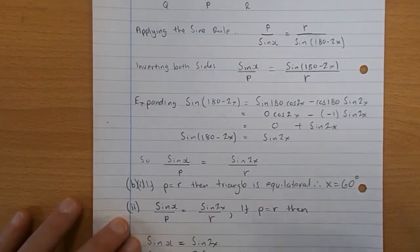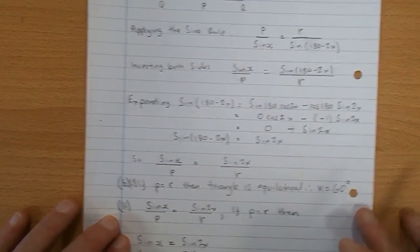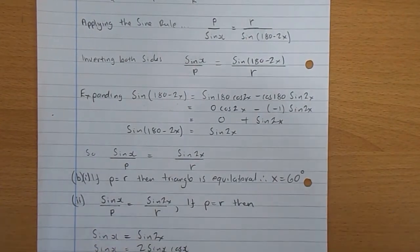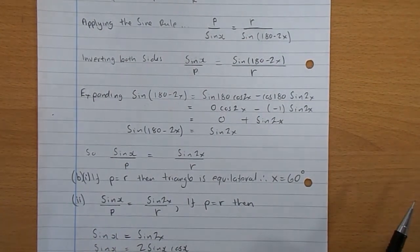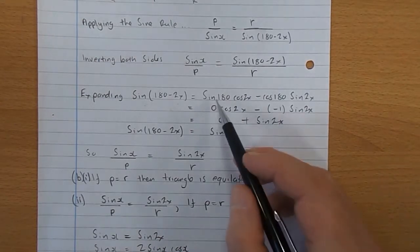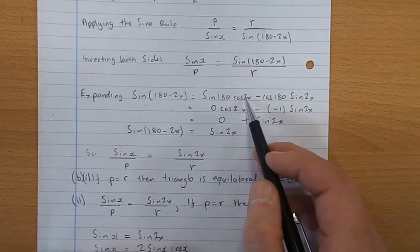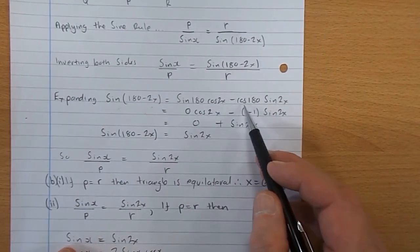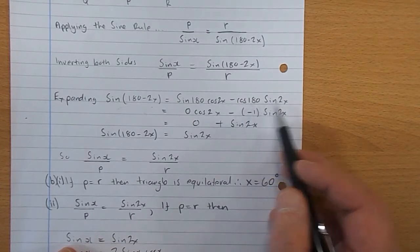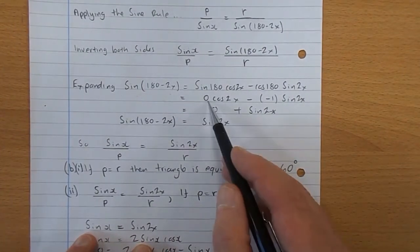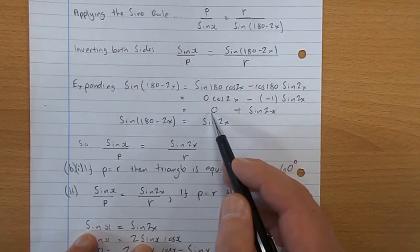Now, we're going to expand sine 180 take 2X. You look for the expansion for sine A take B in your formula list. Sine 180 cos 2X take cos the first one, cos 180 sine 2X. Well, the sine of 180 is 0, so this actually becomes 0.